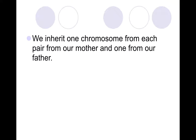We inherit one chromosome from each pair from our mother and one from our father. So you get one of those traits — say for hair color — from your mother and one from your father, even though they might be different versions.